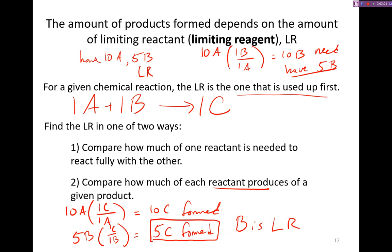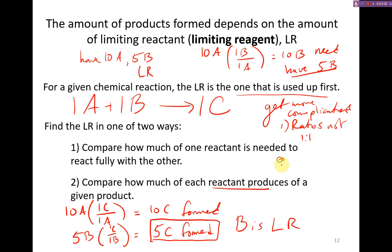This is just a very simplistic version where it's a 1 to 1 ratio and we're given the amount of each molecule. Things will get more complicated in two ways. First, the ratios will not be 1 to 1. But really what makes it more complicated is that you're not going to necessarily be given the number of moles, because you can't measure moles very easily. You're going to be given things like mass, volume, etc. And so you need to convert from those quantities to moles, and then use that to define the limiting reactant.